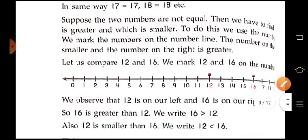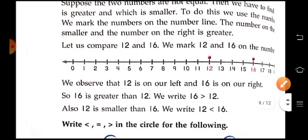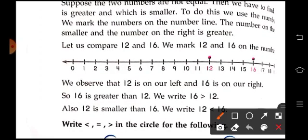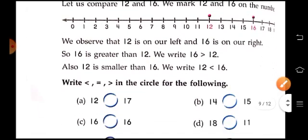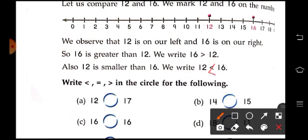So let's compare 12 and 16. We mark 12 and 16 on the number line. We observe that 12 is on our left and 16 is on our right. So 16 is greater than 12, and we write this sign in between these two. Also 12 is smaller than 16, so we put this sign in between these two.